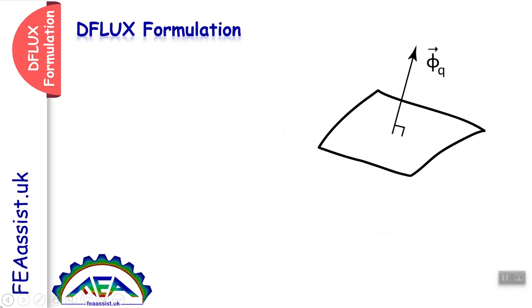Before going into details of the formulation, you need to understand what flux is. In heat transfer problems, flux is the amount of heat energy transferring from a unit of area per unit of time, which is a function of the derivative of temperature with respect to x in one-dimensional problems. For mass diffusion problems, it is a function of concentration with respect to x, and flux is the amount of atoms or molecules transferring from a unit of area per unit of time.